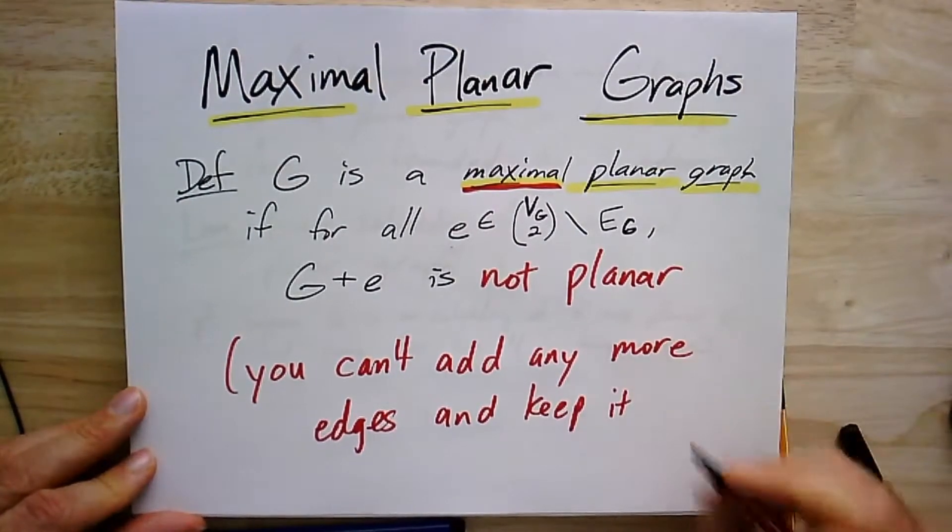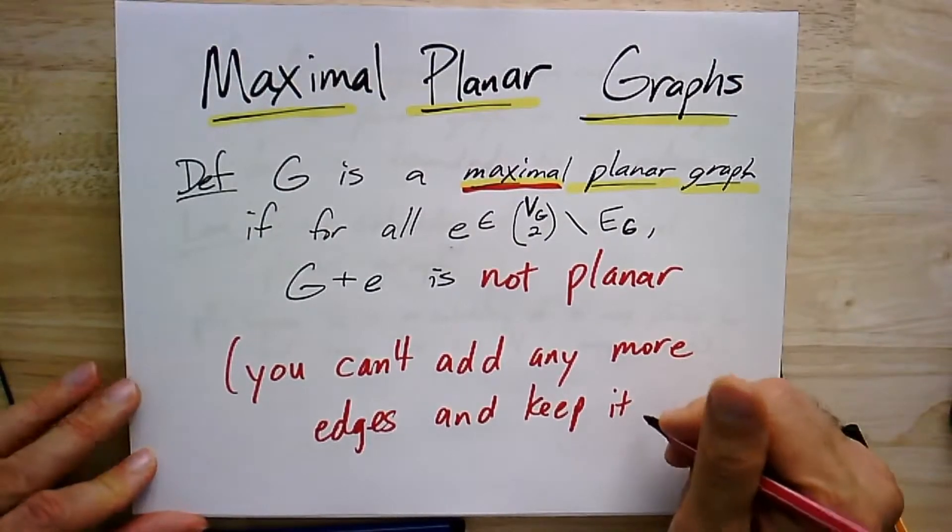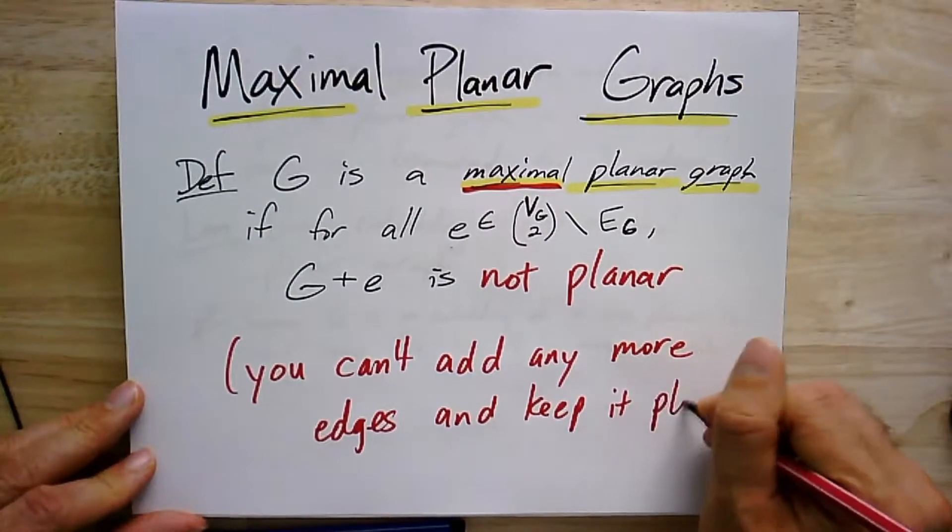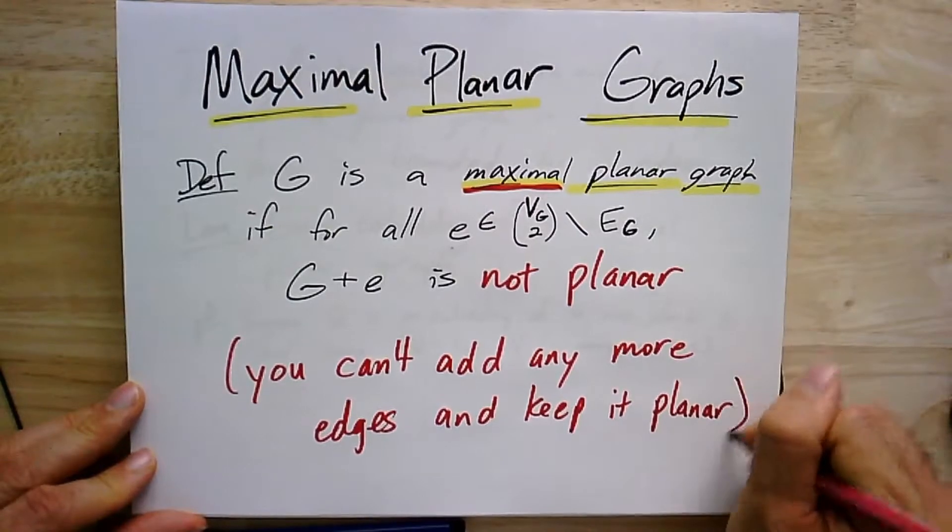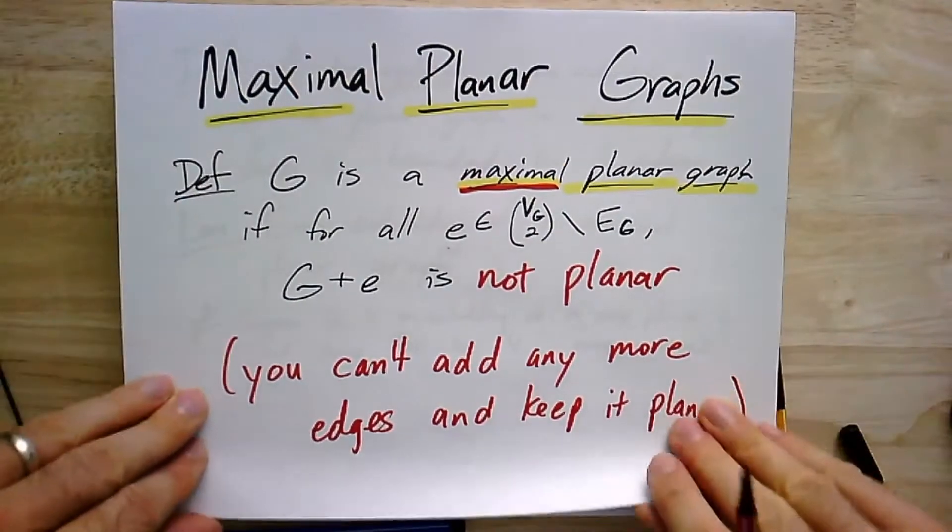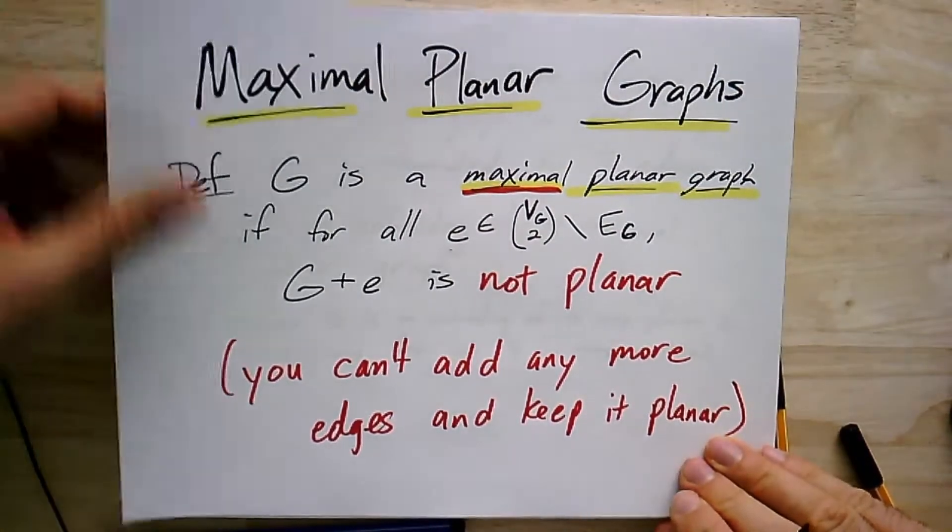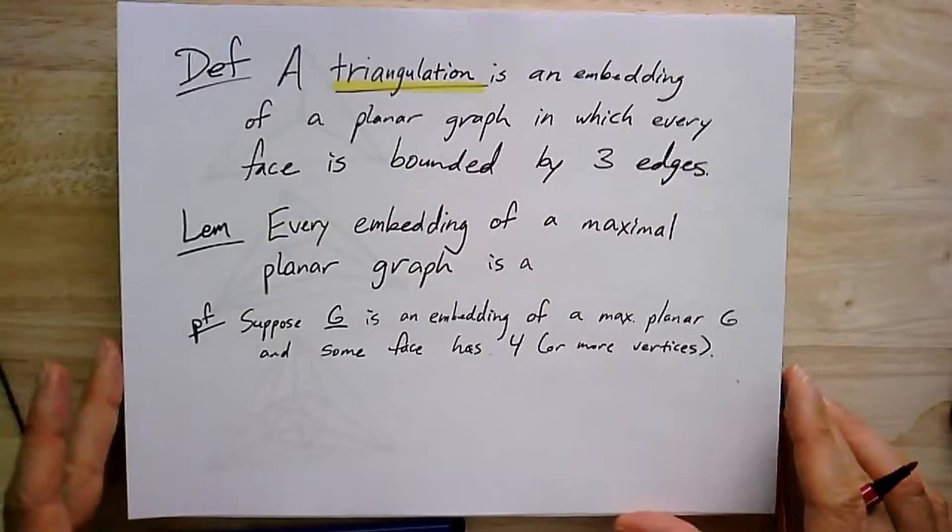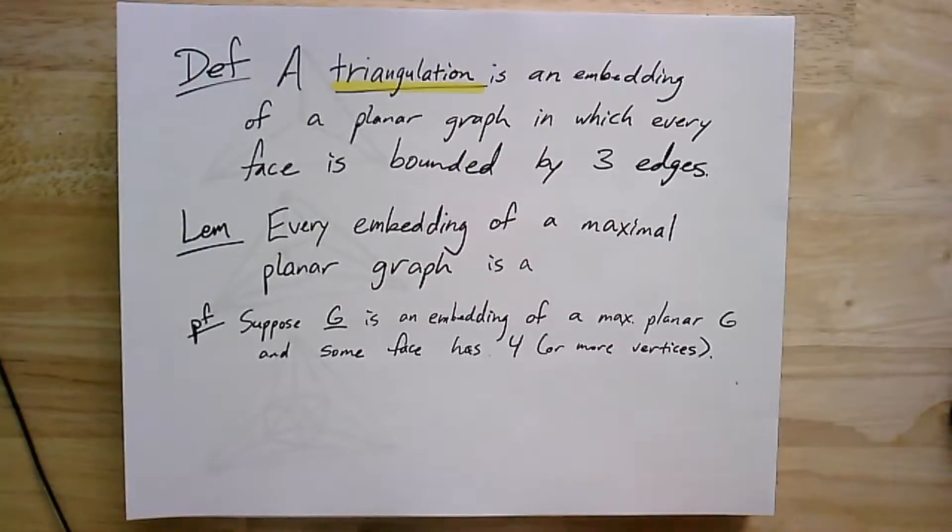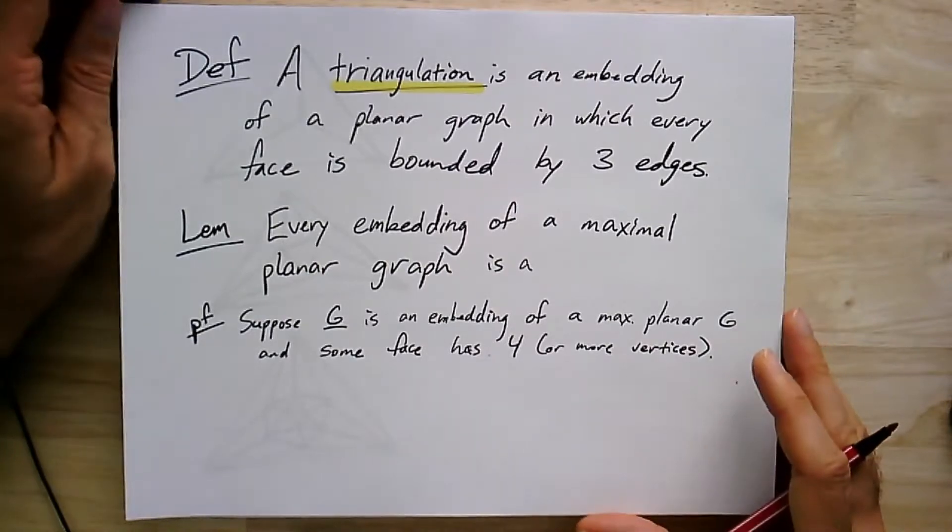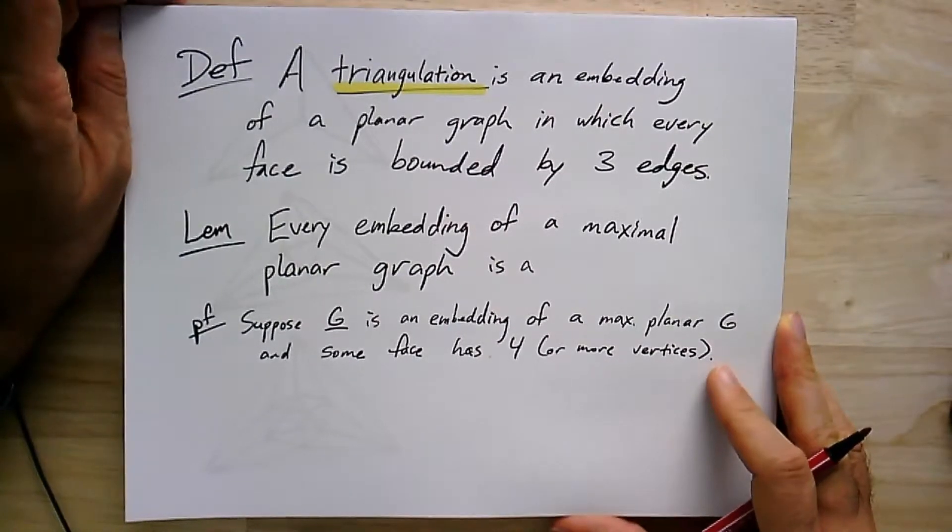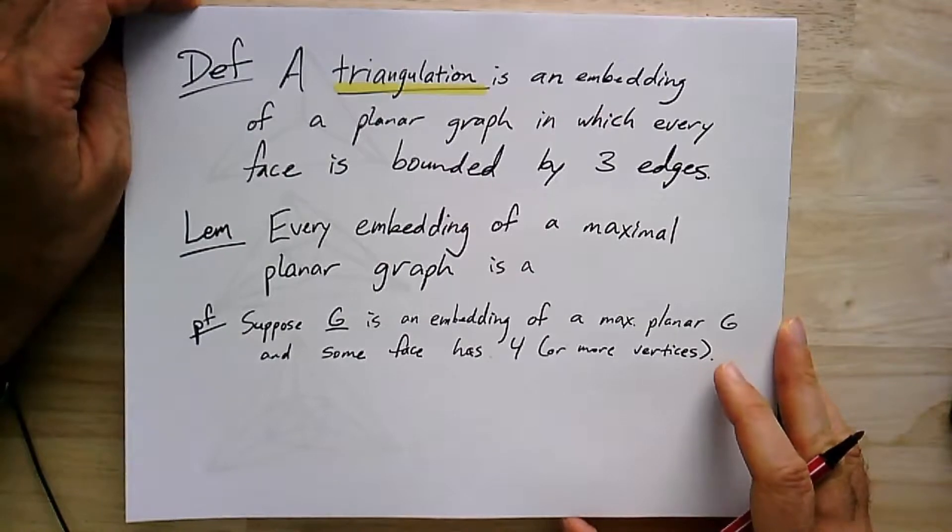You can always add more edges, and if it's not a complete graph, you can add more edges, but it might not be planar anymore. So what is interesting about maximal planar graphs? They're going to give us a lot of leverage for making the extreme statements about what are the most edges we can put in a planar graph.